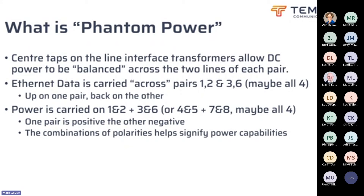Ethernet data is carried over these twisted pairs utilizing what's called balanced signaling — a signal applied across the pairs with one pair up and one pair down. The data is carried on both wires of those pairs, but in opposite polarity in each case. The vast majority of devices will use auto negotiation to determine which pair is used for transmit, which for receive, and what the link speed will be — a mutual agreement between the switch and the device. That also means you'll hardly ever come across those hideous crossover cables we used to have in the old days.